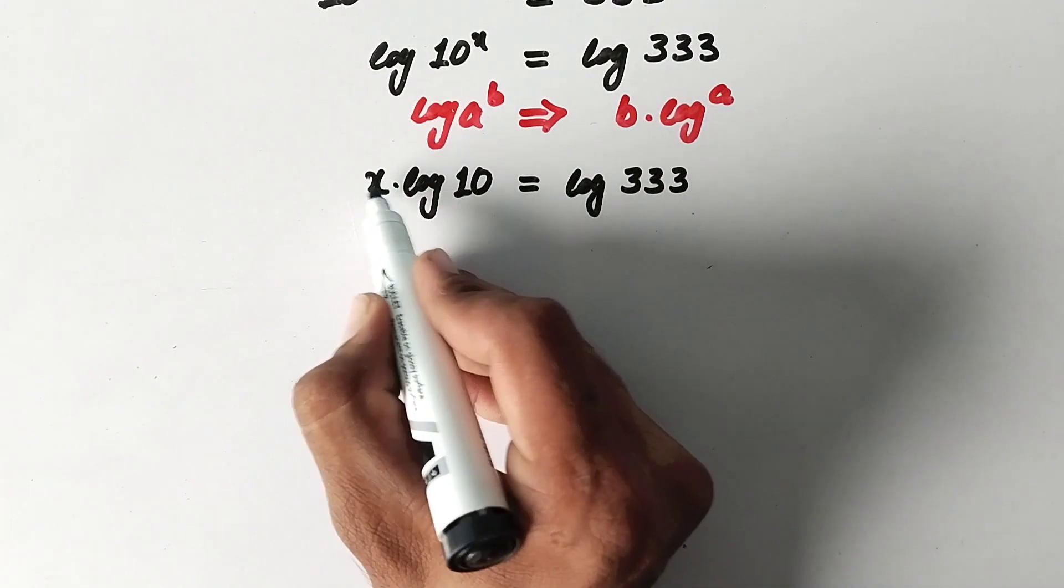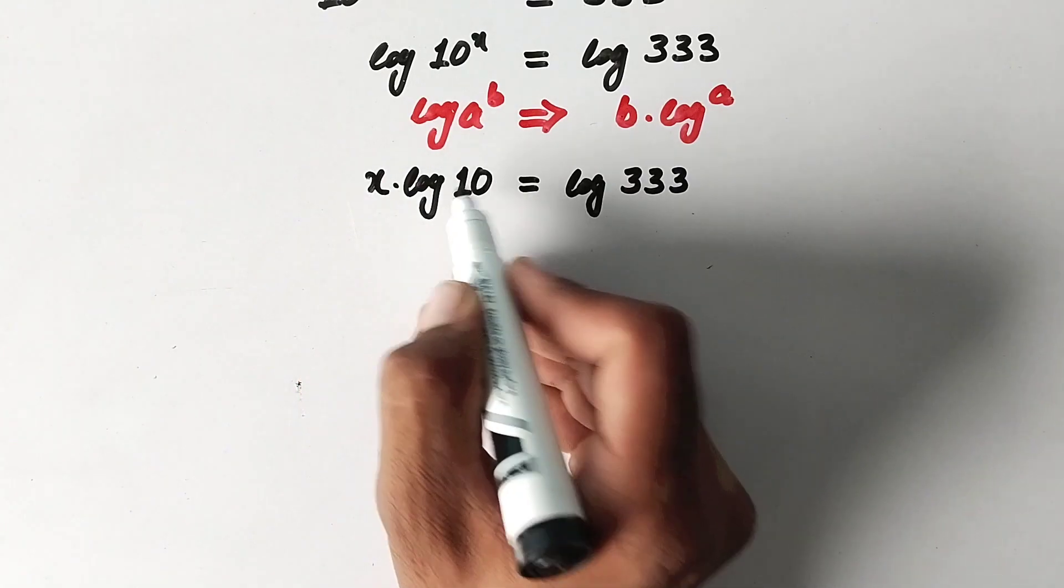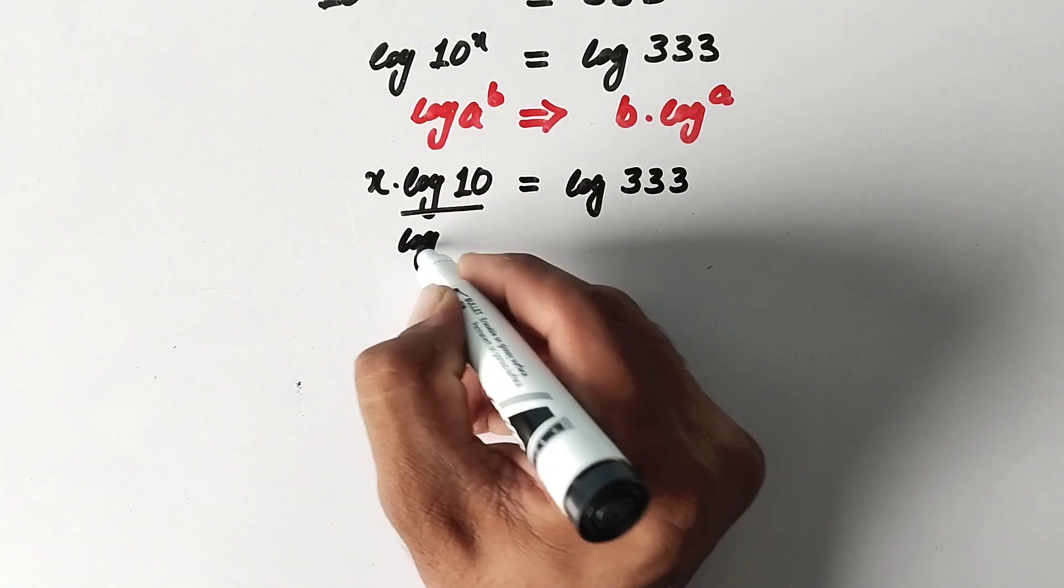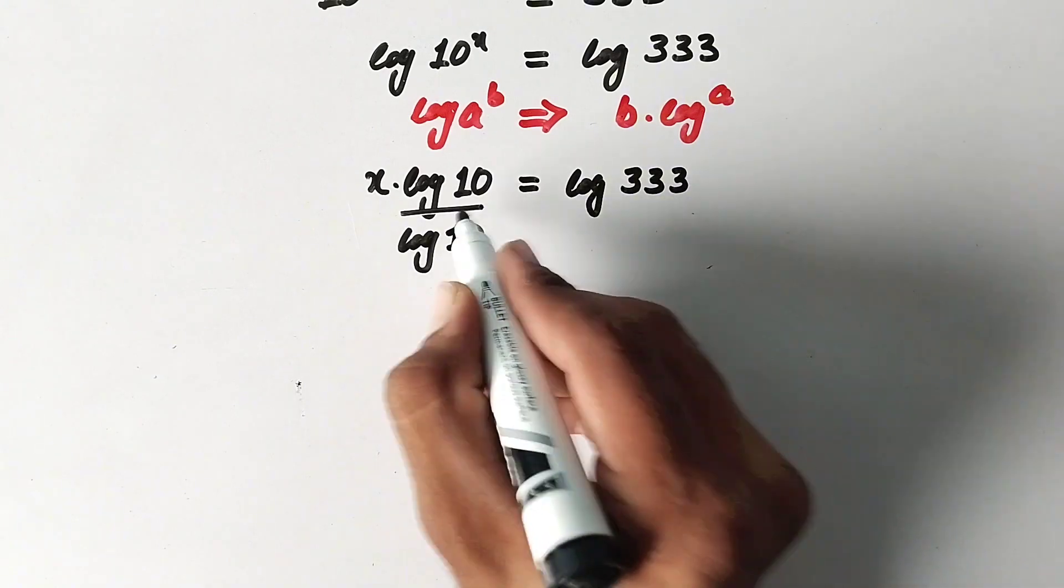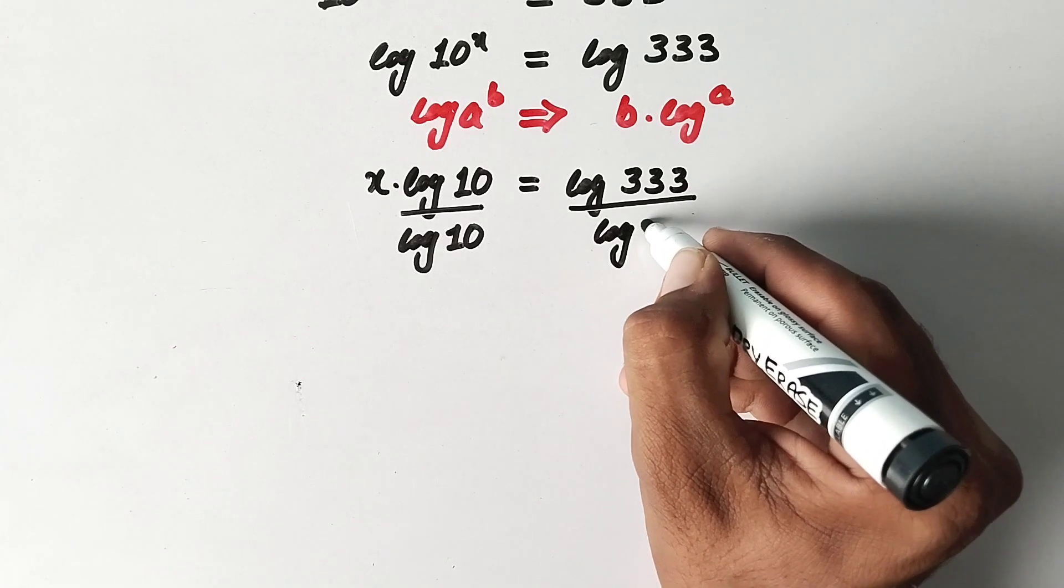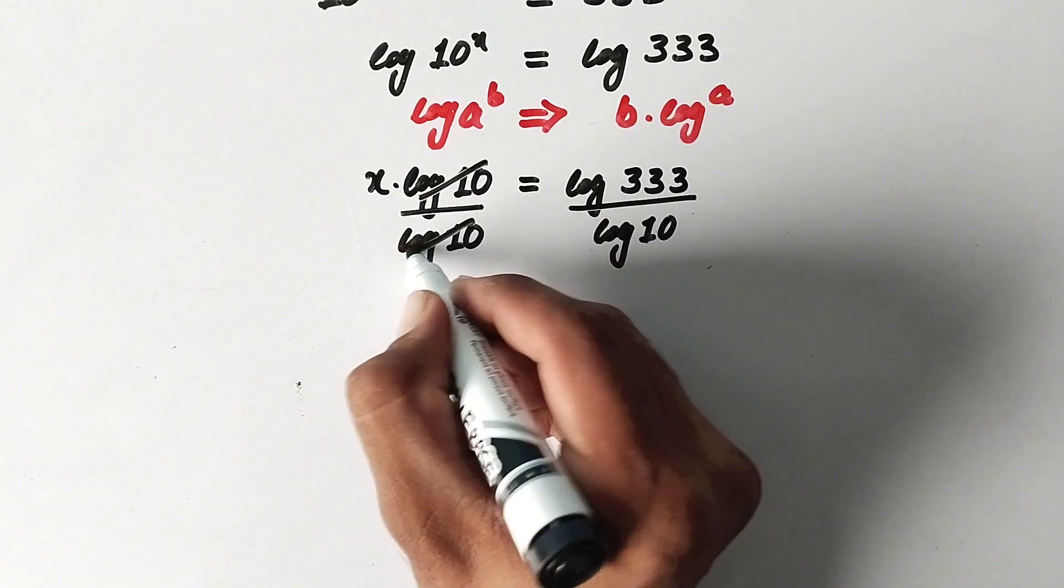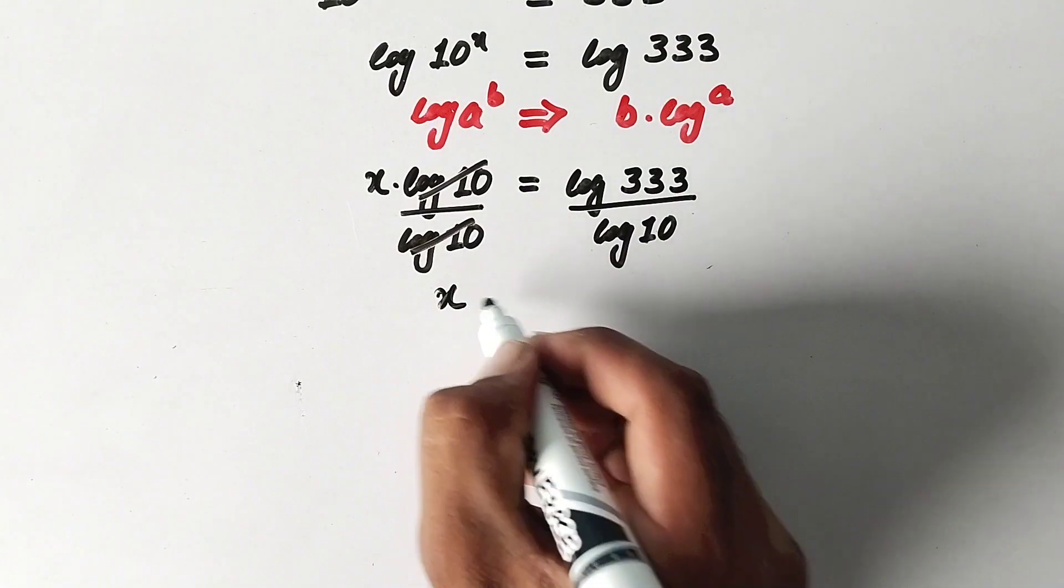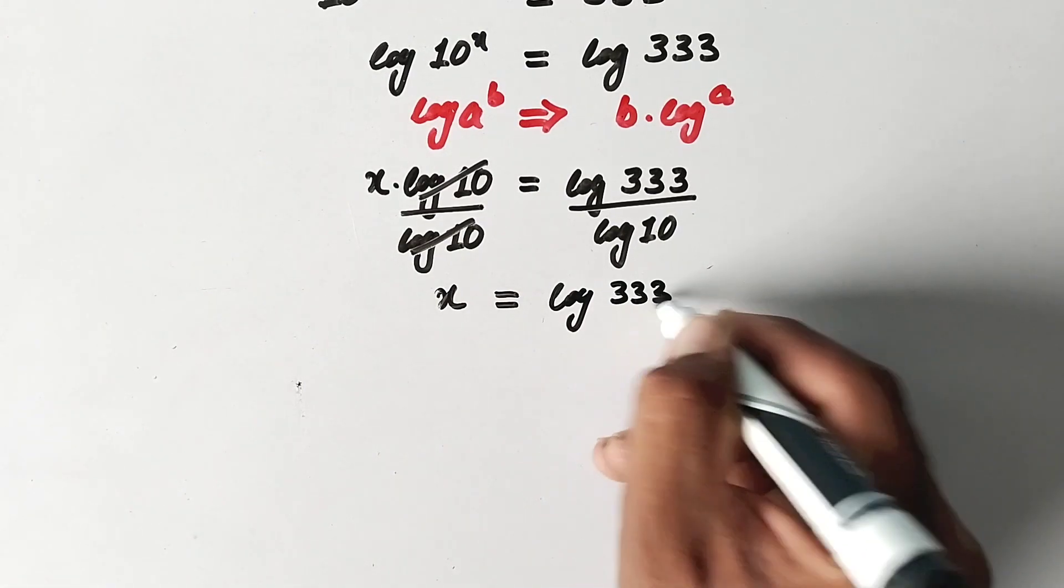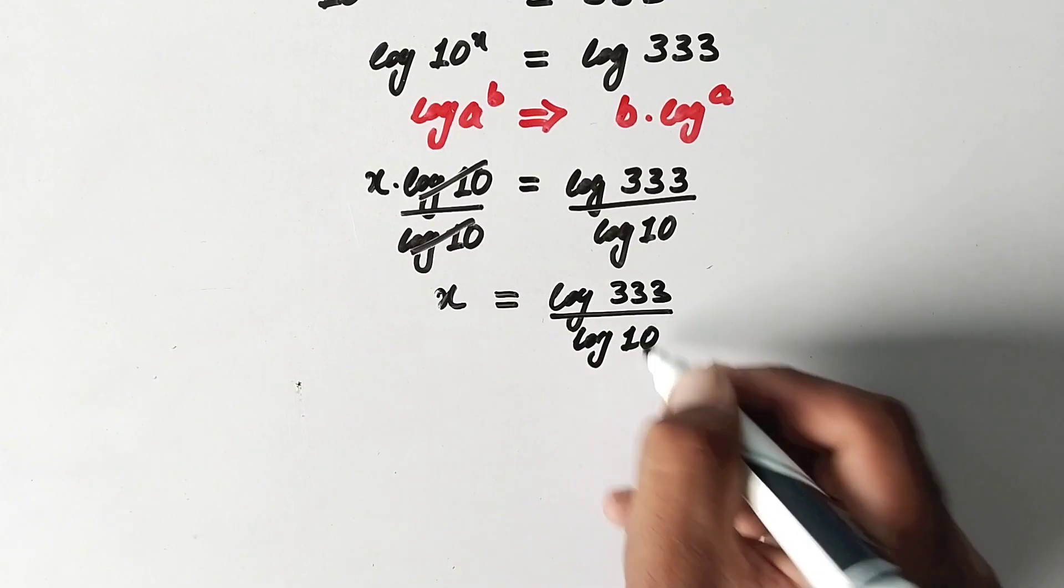And now we have to find the value of x. So we have to eliminate this value. We will divide this value by log of 10. And to balance the equation we will also divide right hand side by log 10. So this log 10 will cancel out, and x equals log 333 over log 10.